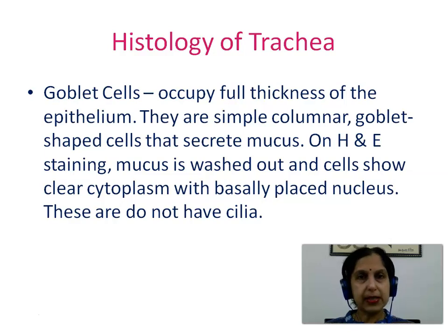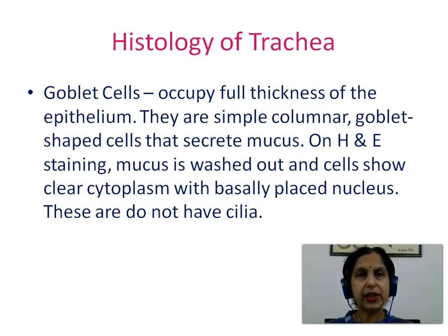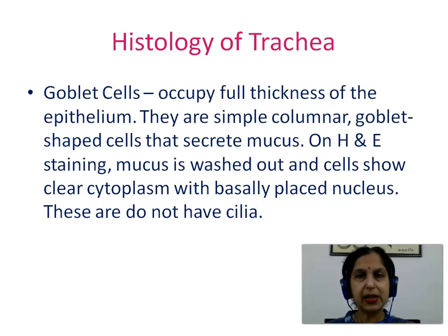Goblet cells occupy the full thickness of the epithelium. They are simple columnar goblet-shaped cells that secrete mucus. On H&E staining, mucus is washed out and the cells show clear or foamy cytoplasm with a basally placed nucleus. These cells do not have cilia.